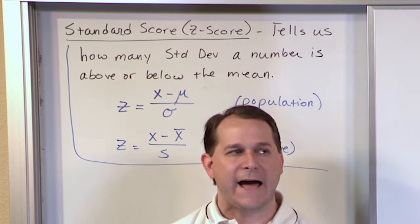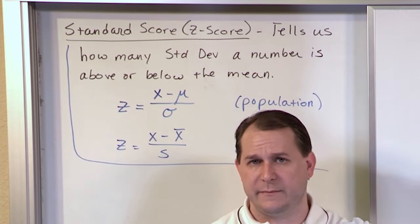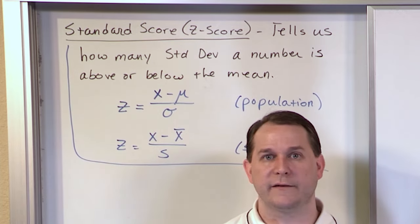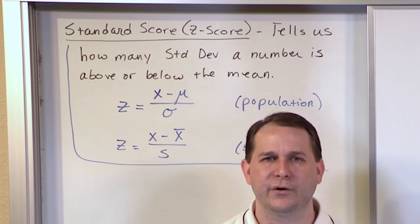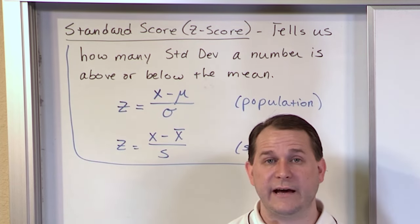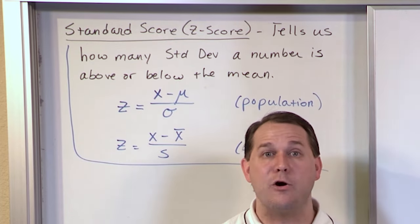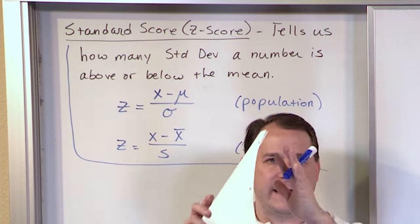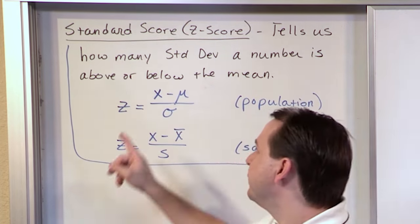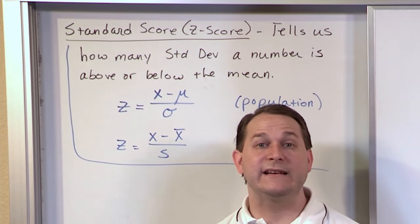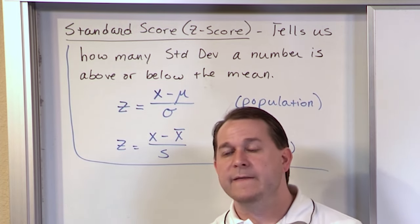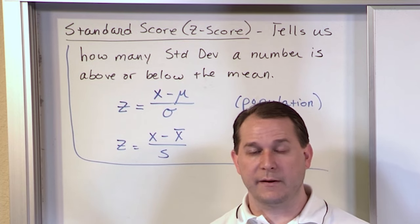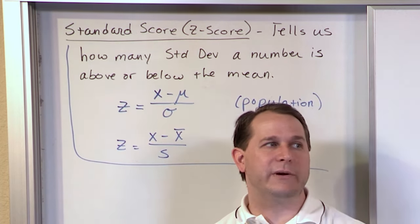I want to be able to go to my friend after we take an exam and compare, even though he's in a different class with a different professor. I don't want to know how many points above the mean I am — if I say I got 10 points above the mean and he got 6 points above the mean, that's not very useful because I may have actually done worse depending on the standard deviation. We want to compare in terms of how many standard deviations we are above the mean, because now we're comparing apples to apples even with different classrooms.